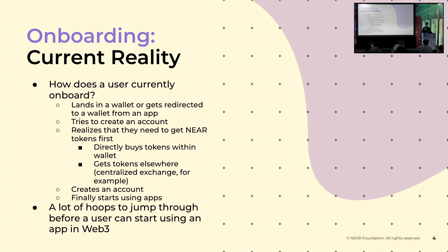Then you realize you actually need some Near tokens. There are several ways to do that — one is directly buying tokens from within the wallet if it's supported, but if not, you probably have to get tokens from centralized exchanges or ask a friend to help. After going through all of that, you can finally create an account and start using the apps. While that's unique to Near, it's actually pretty similar across the Web3 space — it's almost an established paradigm. Even though we may take it for granted today, it's a lot of hoops to jump through, and that is sufficient to deter most Web2 users from trying out any dapp in Web3.